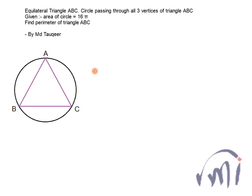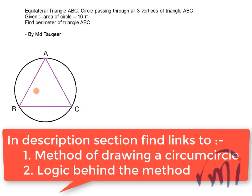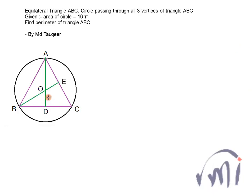When we make a circumcircle of any triangle, we draw the perpendicular bisectors of at least two sides, and wherever those two perpendicular bisectors intersect, we take that point as the center of the circle. The radius is the distance from that intersection point to any vertex. In the case of an equilateral triangle, the perpendicular bisector of each side also becomes the median — so the perpendicular bisector of BC is also the median from point A to BC, and the perpendicular bisector of AC is the median from B to AC. They intersect at point O.